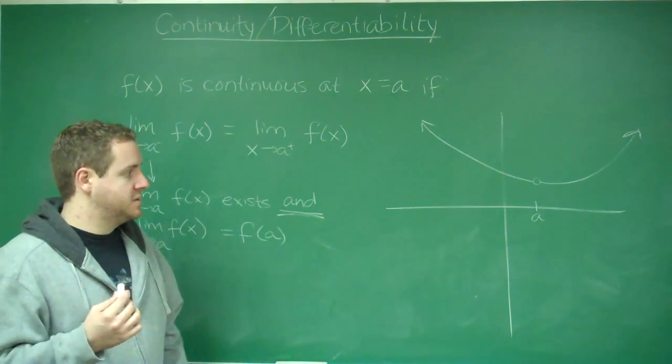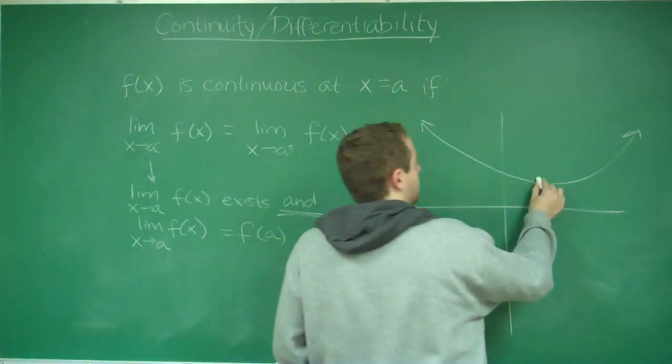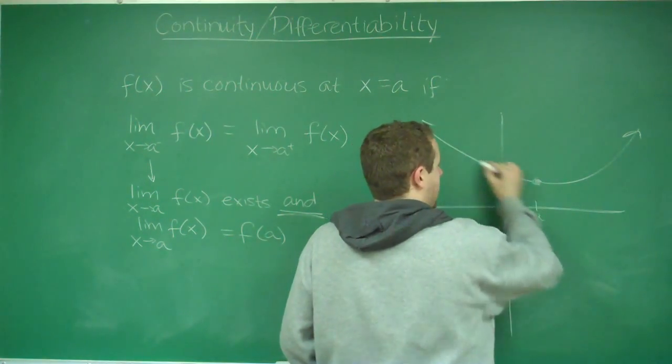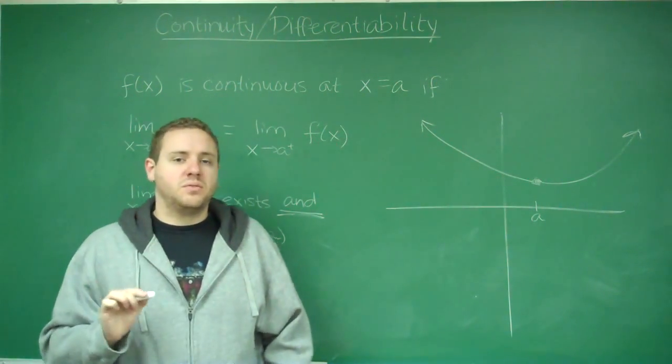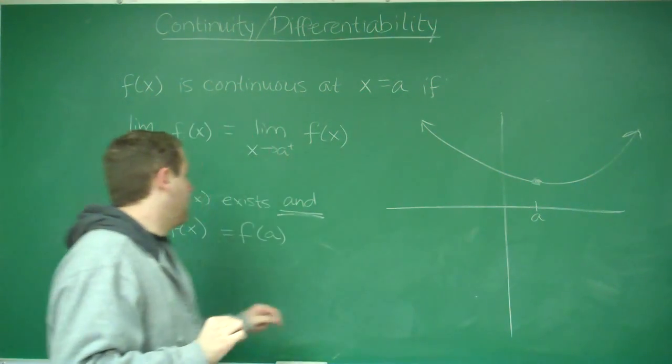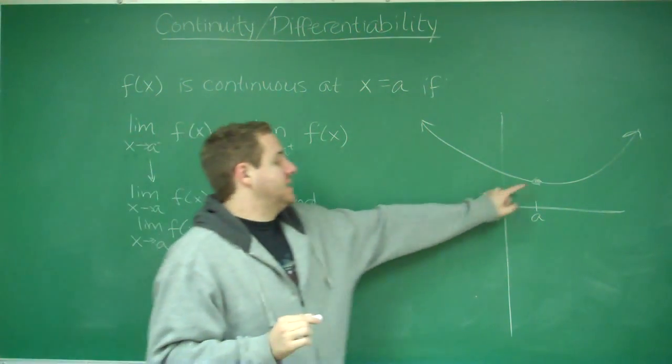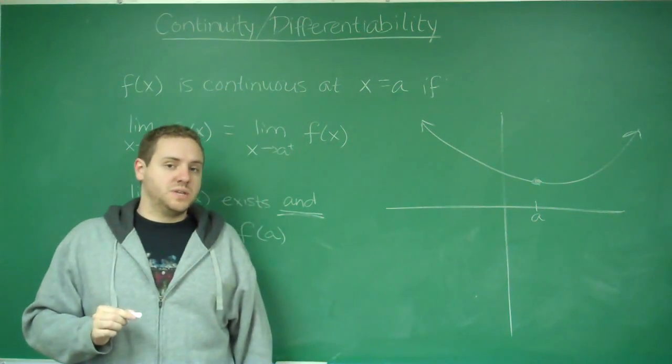So those are your types of discontinuities. So you can see that if this circle was filled in, now we have a continuous function because at a, not only is the limit from the left and the right the same, but that the function has that exact value that the limit is approaching.